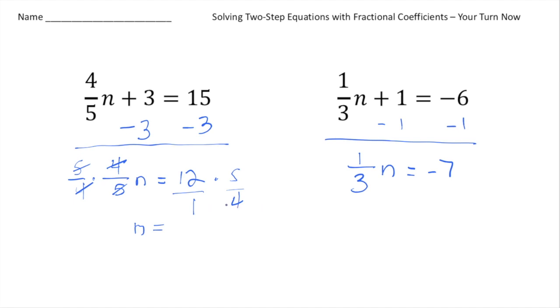And now I can cross-reduce. So make this a 1 and make this a 3. And now 3 times 5 gives us 15. So your first solution should have been n equals 15.